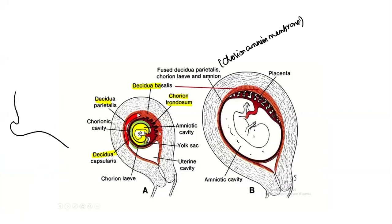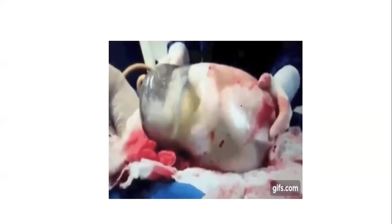Simultaneously, the chorion frondosum was developing and communicating with the decidua basalis — that is what is called the placenta. The decidua parietalis had fused to form a chorioamnion membrane. The baby is packed inside the chorioamnion membrane — as you can see in this picture where the doctor is holding the membrane with fluid inside.